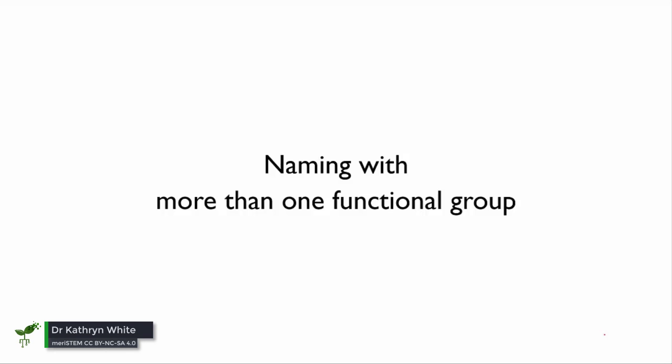In this video, we're going to look at the situation where you have more than one functional group in a molecule. For instance, if you had a molecule that contained both an alcohol group and a ketone group, how would you name that?